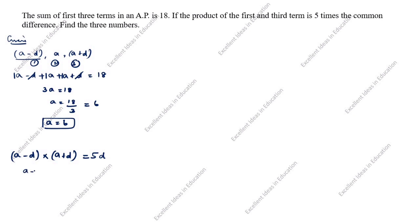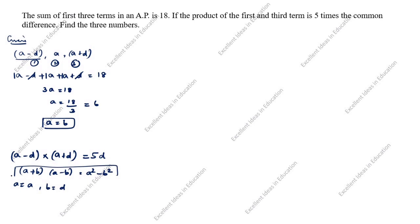What is the formula? We use the identity A plus B into A minus B, which equals A square minus B square. Here A is A and B is D. Substituting into the formula: A square minus D square is equal to 5D.